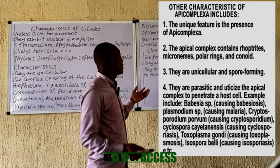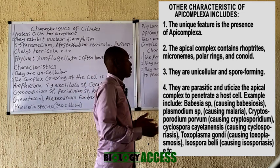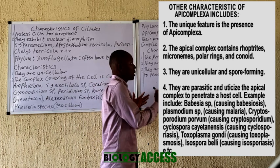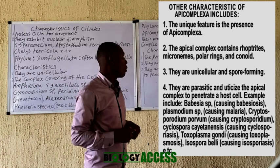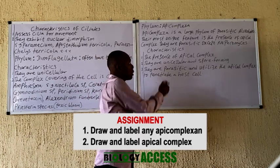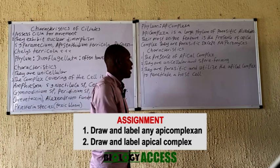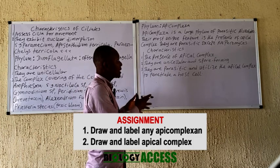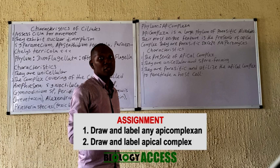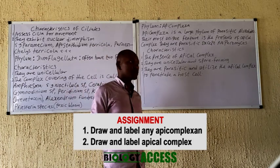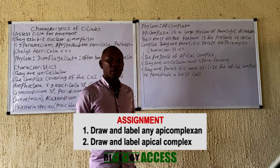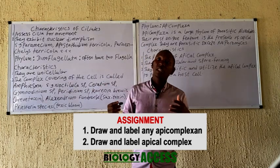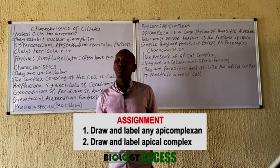Examples of organisms in this group include Plasmodium and various other parasitic species displayed on the board. For assignment, draw and label the apical complex, label the various components, and highlight the characteristics of this group in a particular organism. You can send your answers to the email in the channel description. In Part Two of this series, we'll be discussing the other clads — the Excavata and the Amoeboid Protozoa. Thank you.